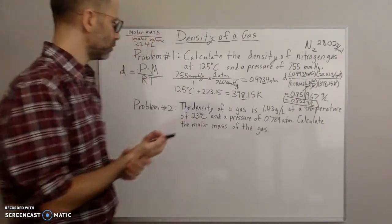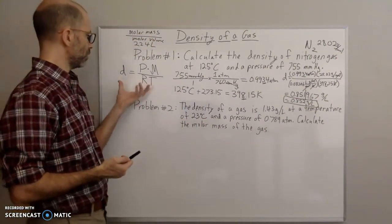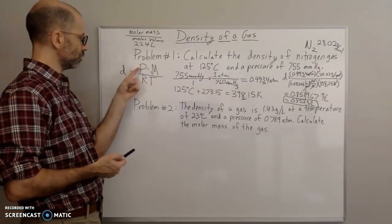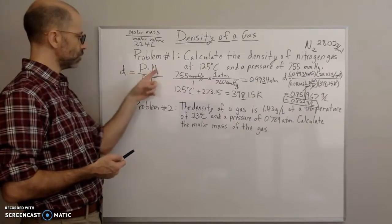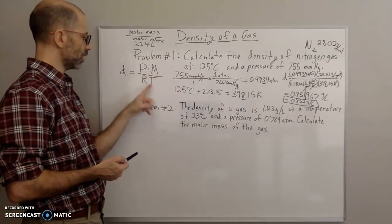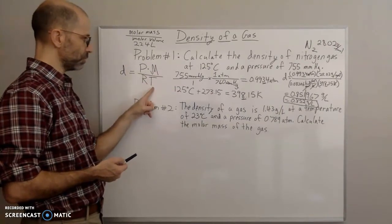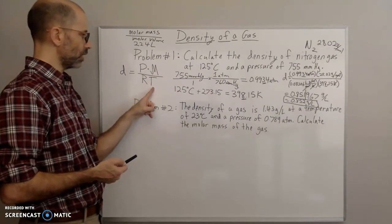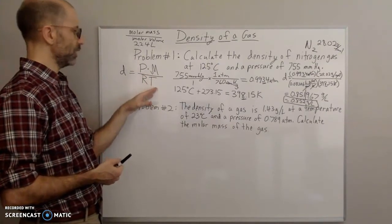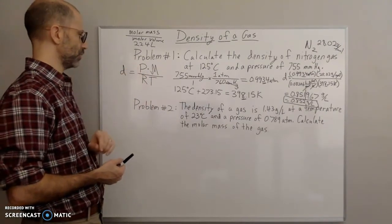So 0.852 grams per liter is the density of this gas. That's the first problem — pretty straightforward. Use the equation: density equals pressure times molar mass divided by R times temperature. The only things you need to make sure of are that temperature is in Kelvin and pressure is in atmospheres.